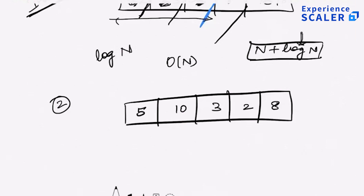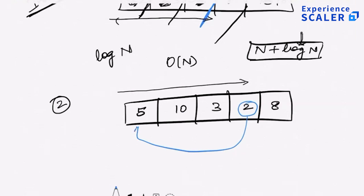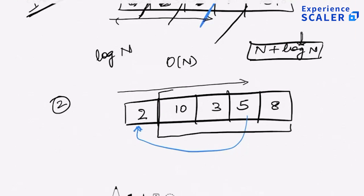Do we all agree with that? Smallest number has to come at the beginning. So one thing I can do — which is not very optimal but still works — is every single time I look at what is the minimum in my given array. For example, if I run this loop, I'll figure out that 2 is the minimum. So if 2 is the minimum, let me push 2 to the beginning of the array. 2 comes here and I can just swap it with 5. So 5 comes at the place of 2. Now I know that 2 is at the right position.